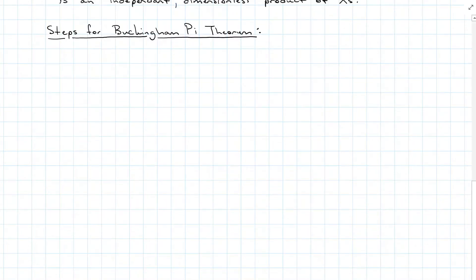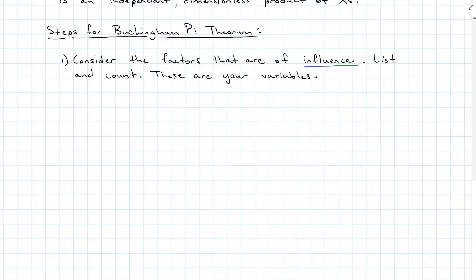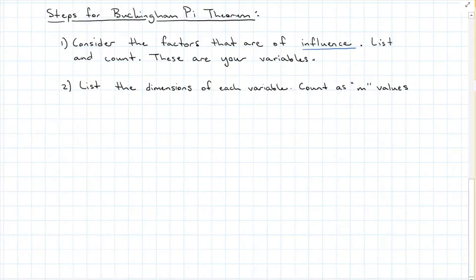The steps for the Buckingham Pi Theorem. Step one: consider the factors that are of influence on the system. List them and count — these are your variables. Step two: list the dimensions for each variable and count each dimension as your m value.